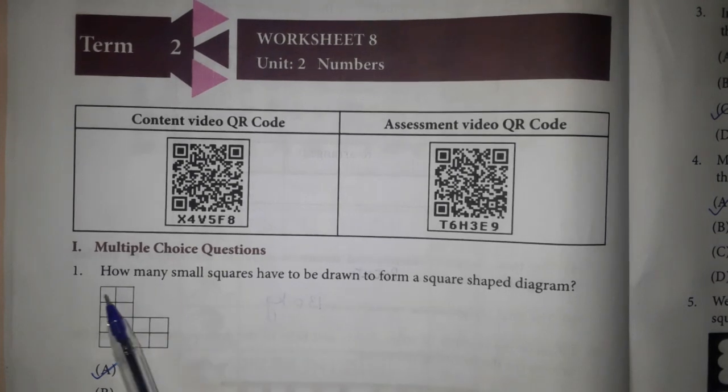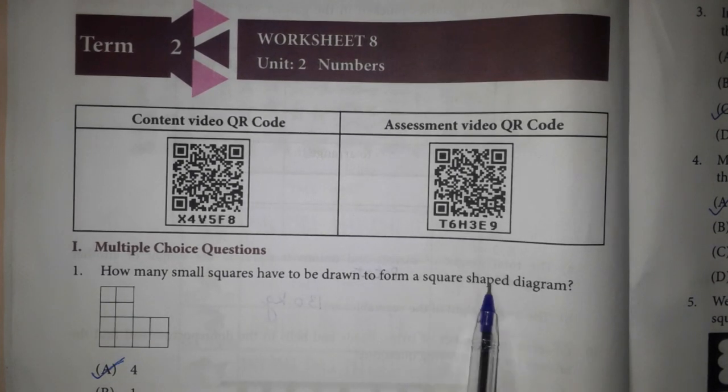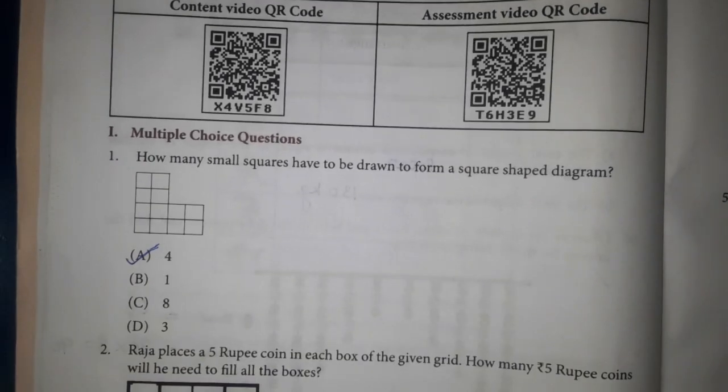Multiple choice questions. 1. How many small squares have to be drawn to form a square shape diagram? Answer 4. 4 squares drawn up and we will get a square shaped figure.